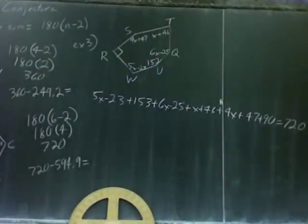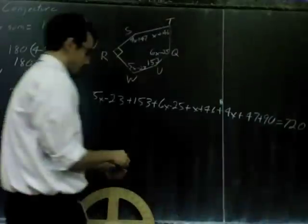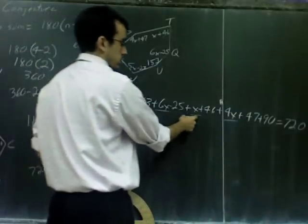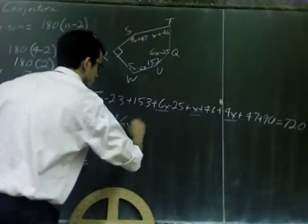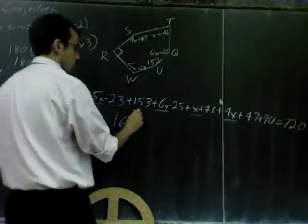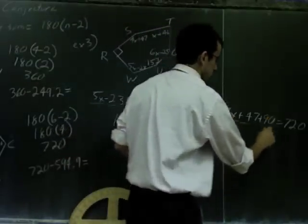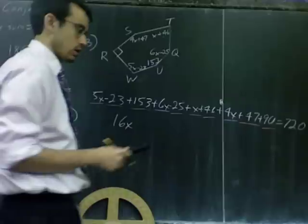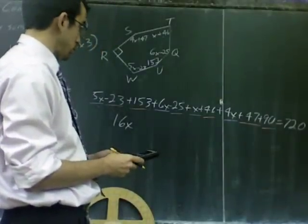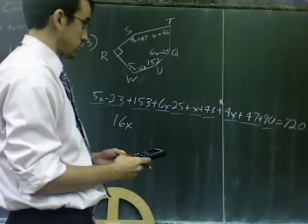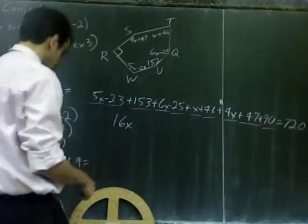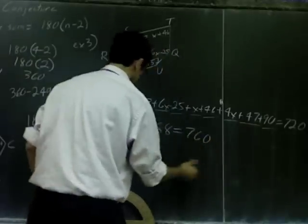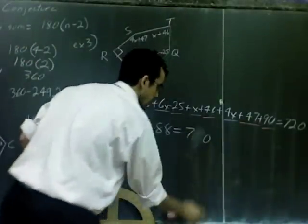Then, all I have to do is combine like terms. So, in this case, I'm going to combine all my x's. Let's see. I've got 5x, 6x, 1x, 4x. 5 plus 6 is 11, 11 plus 1 is 12, 12 plus 4 is 16x. And then, I have to combine all my regular numbers. And when I combine those, I've got negative 23, positive 153, negative 25, positive 46, positive 47, and positive 90. And I add all of them up. Negative 23 plus 153 minus 25, plus 46, plus 47, plus 90, I get 288. So, I'm going to write plus 288. And it still equals 720.